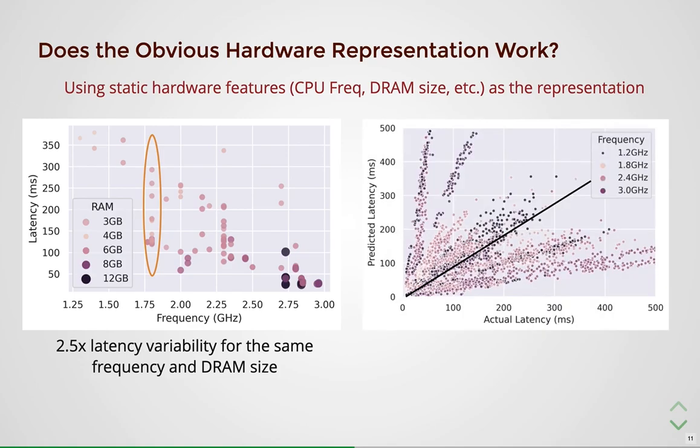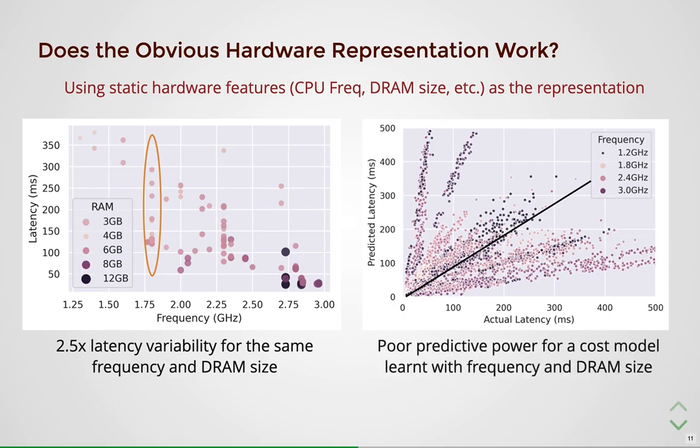To conclude this concretely, we trained a cost model across 70 devices using the aforementioned static features as the hardware representation and plotted the predicted latency for 30 unseen devices against their actual characterized latency. From the plot, it is clear that the learned model is very inaccurate with a poor predictive power. One can encode more complex features such as pipeline depth, cache size, and operating system versions and software library versions to represent the device.